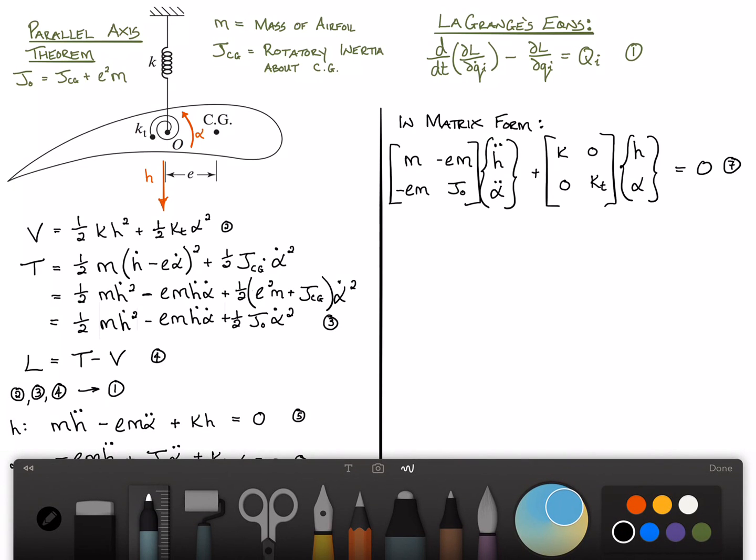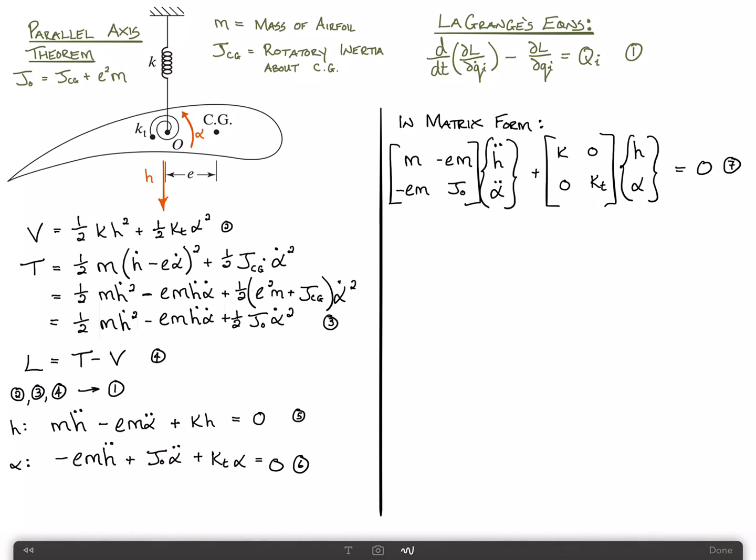The interesting thing about this problem, however, is generally the forcing function on the right wouldn't be zero. And this is zero vector, by the way. Generally, the forcing function would be something like you'd have a lift acting here through the center of gravity. By the way, in most airfoils, the center of gravity is actually aft of the elastic axis. And the only difference is that these values here would be positive if that were the case, if the CG were actually aft of the elastic axis.